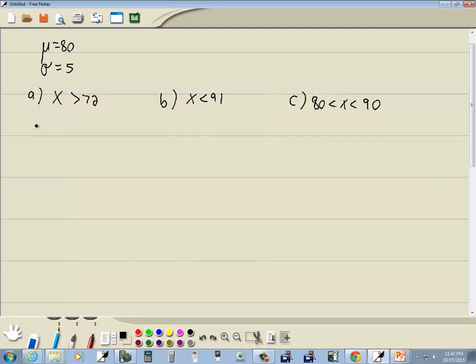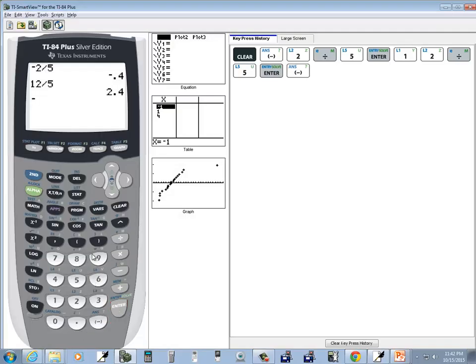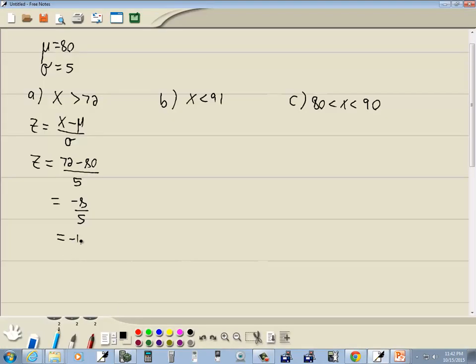How we're going to switch this is using our formula for z, which is equal to our x value minus mu over sigma. Now the x value I'm referring to is 72. So that's 72 minus mu, which is 80, over sigma, which is 5. 72 minus 80 is negative 8 over 5. So let's see what that gives us, negative 8 over 5 is negative 1.6. So this x is greater than 72 becomes z is greater than negative 1.6.